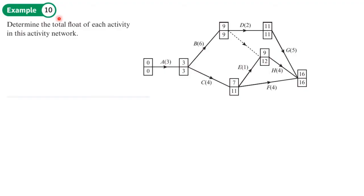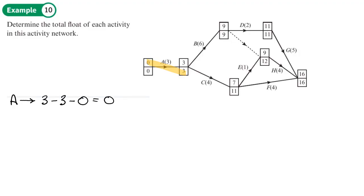Example 10: determine the total float of each activity in this network. Starting with activity A — using that diagonal pattern, the float is 3 minus 3 minus 0, which gives a float of 0.